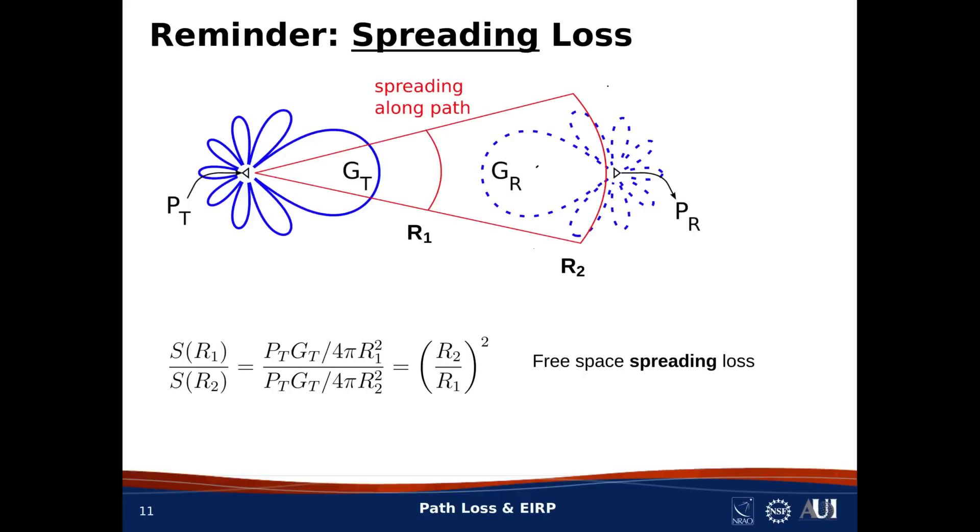Now to see this, consider two distances, R sub 1, and then R sub 2, which is greater than R sub 1. The power density is less at R sub 2 than R sub 1 because the wave spreads out power with increasing distance. And we can calculate this. Let's say the power density at R sub 1, we'll call that S at R sub 1, is the numerator of the expression now on your screen. S at R sub 1 is equal to the transmitted power divided by 4 pi R sub 1 squared times the transmit gain.